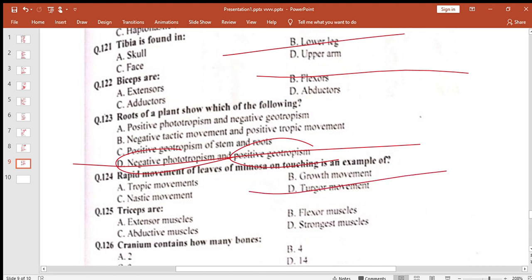Tricep arm. Tricep arm is extensor. Cranium contains how many bones? Cranium has 8 bones.